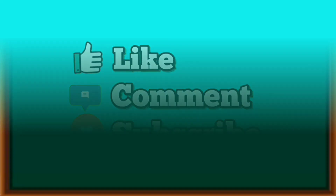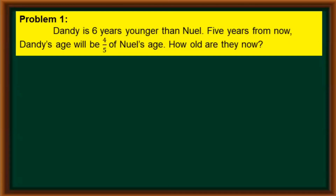Let us start with our first problem. Dandy is six years younger than Noel. Five years from now, Dandy's age will be four-fifths of Noel's age. How old are they now?